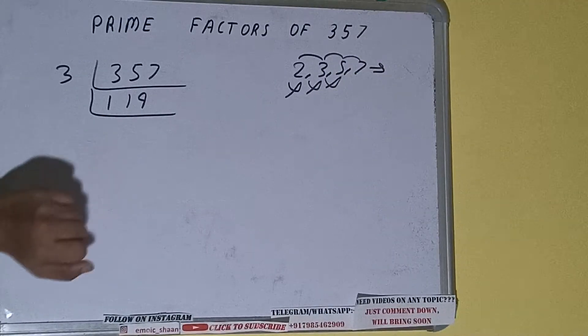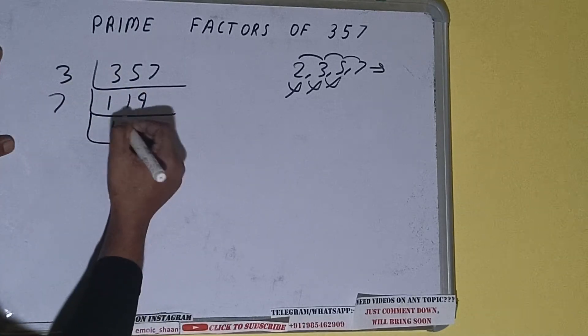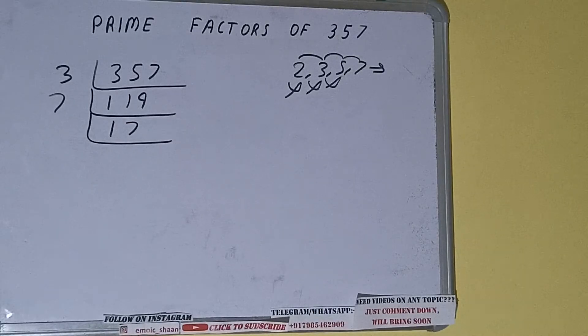7 ones are 7, 49. It is divisible, so divide it. 7 ones are 7, 49. 7 sevens are 49. We'll be having 17. And 17 is not divisible by 7, and 17 is also a prime number.